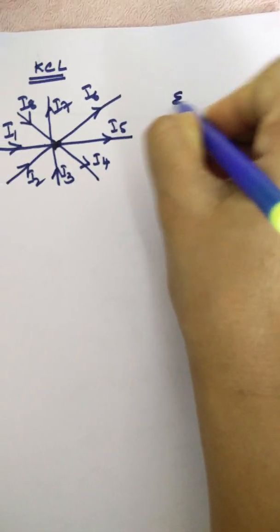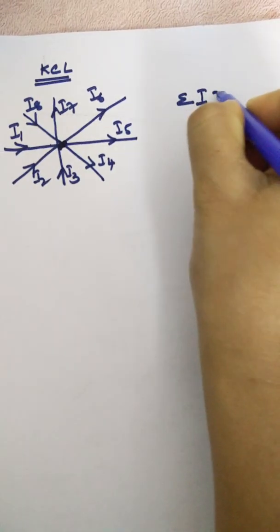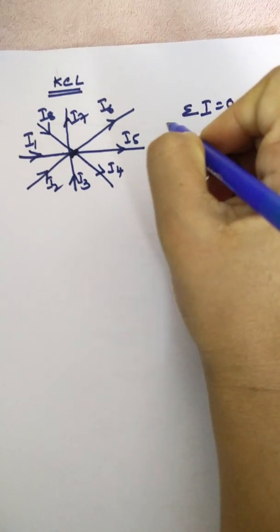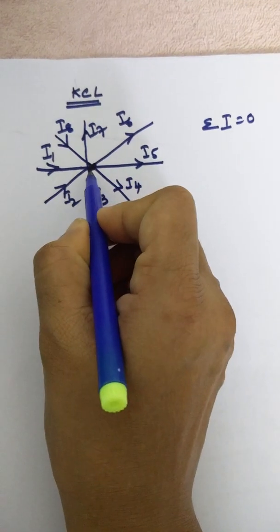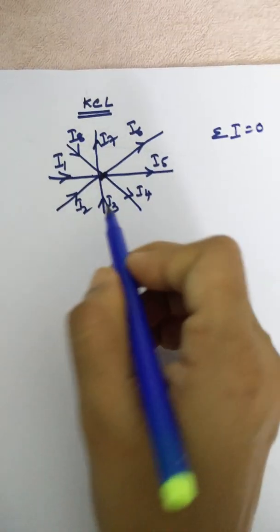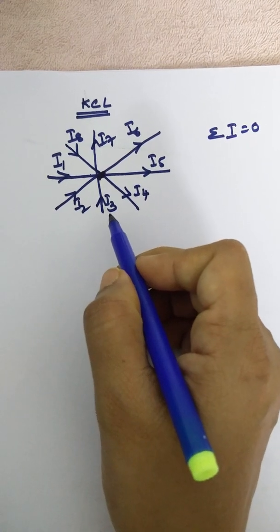According to KCL, sum of all currents at a node equal to zero. Let us assume entering currents as plus currents and leaving currents as minus currents or vice versa.